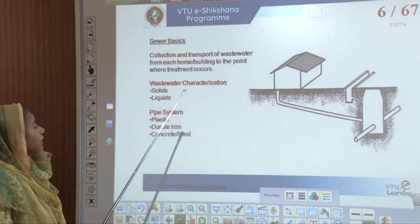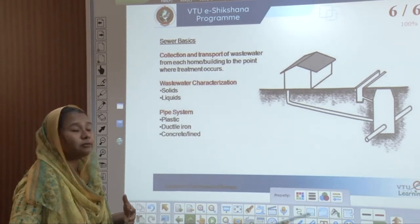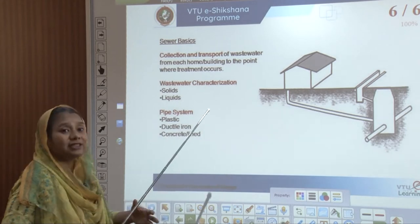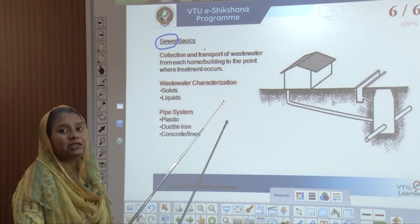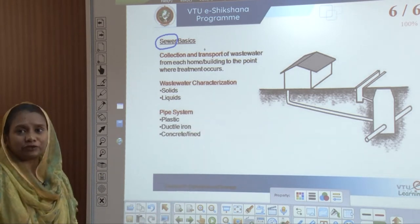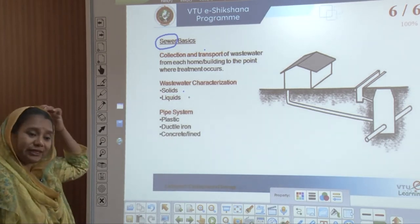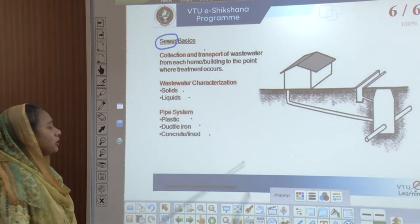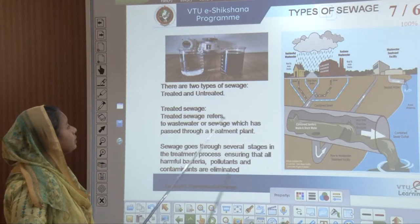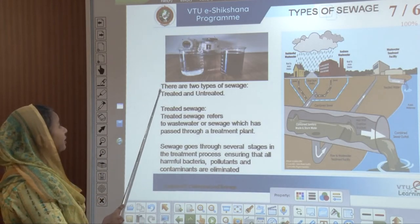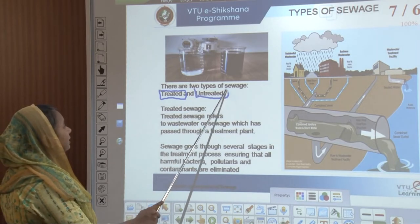Before we get into details, let us revisit certain basics of sewers and what is happening in the collection and transportation system. Wastewater from each building collects into the sewers and is transported to the water treatment plant. The characterization of wastewater could be in two forms: solids and liquids. Pipes can be in three different materials: plastic, ductile iron, or concrete or lined concrete. There are two different types of sewage: treated wastewater and untreated wastewater.